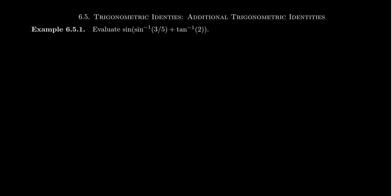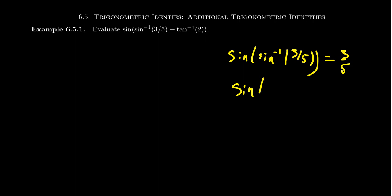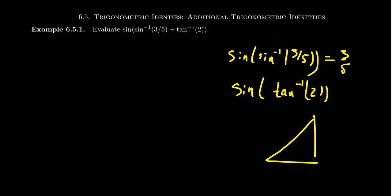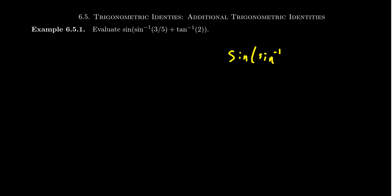Now, some of these things would be pretty easy. Like, if you take sine of sine inverse of three-fifths, then sine inverse of three-fifths is the angle which, if evaluated on sine, would give you three-fifths. So, as these are inverse functions, this is equal to three-fifths — no problem. And if you did sine of tangent inverse of two, the idea is if you draw a triangle, the tangent ratio is supposed to be two, which is two over one. By the Pythagorean theorem you can finish it. But that's not the setting we have right now.